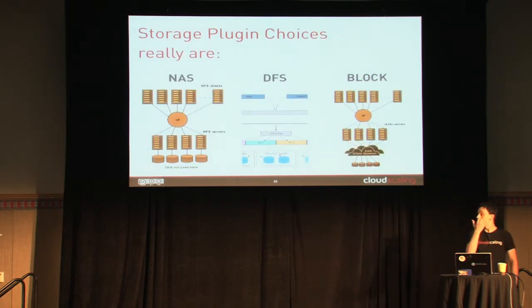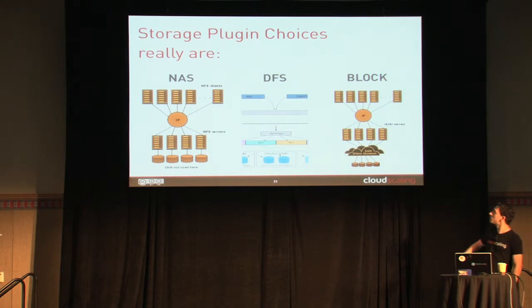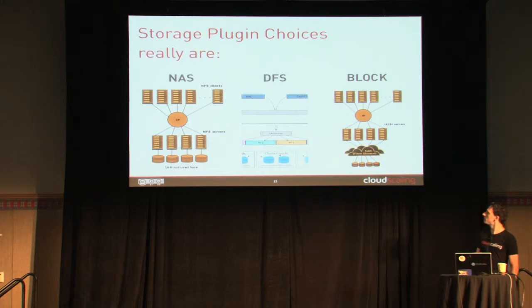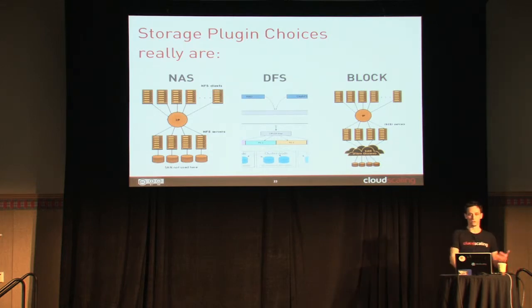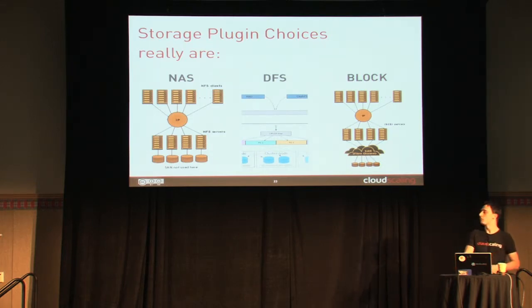Really, it comes down to all these providing one of three things: NAS backends, distributed file systems — and that's actually Ceph there — and block storage, generally SAN, iSCSI, Fibre Channel over Ethernet, or regular Fibre Channel, for instance.